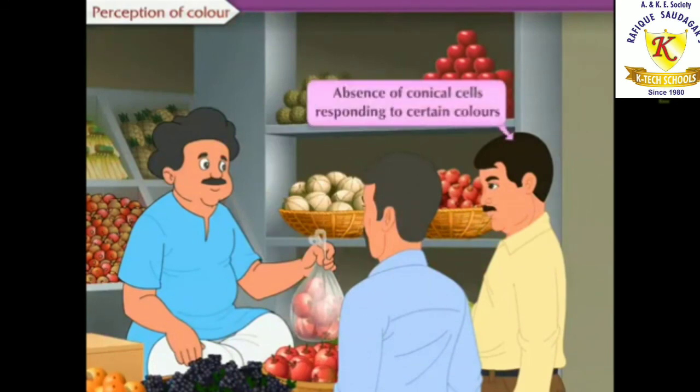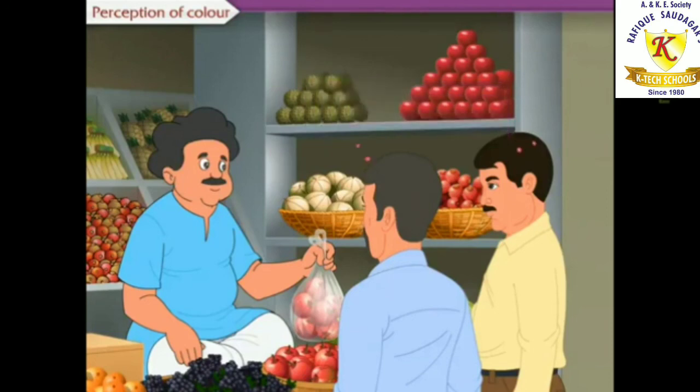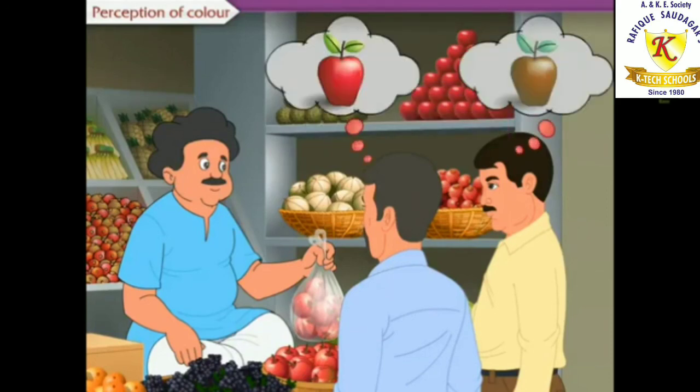Some people lack conical cells responding to certain colors. These persons cannot recognize those colors or cannot distinguish between different colors. These persons are said to be color blind.